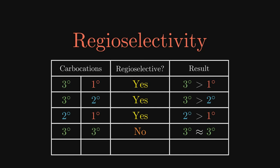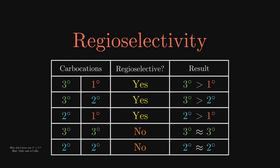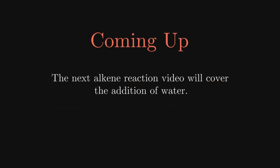When the potential carbocations are of the same degree, but not structurally identical, we would expect an approximately equal distribution of potential products. In the next video, we will continue covering alkene reactions with the addition of water. Thank you very much for watching.